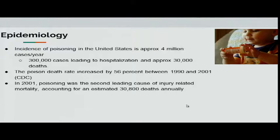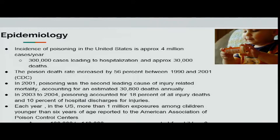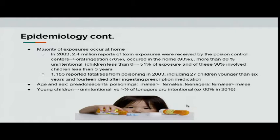When a kid is less than six years old, the poisoning is usually unintentional. For children ages 13 to 19, you see more intentional injuries. Approximately 100,000 to 140,000 exposures are reported for children 6 to 12 years old, and 150,000 to 170,000 for teenagers 13 to 19. Most poisonings occur at home. In 2003, 2.4 million toxin exposure reports were received by poison control — 76% were oral ingestions, 93% occurred at home, and more than 80% were unintentional. About 2,000 fatalities from poisoning occurred in 2003, including 27 children younger than six, 14 of whom died after ingestion of prescription medication. Pre-adolescent poisoning is male more than female; for teenagers it's more female than male. In 2016, 60% of teenage exposures were intentional.